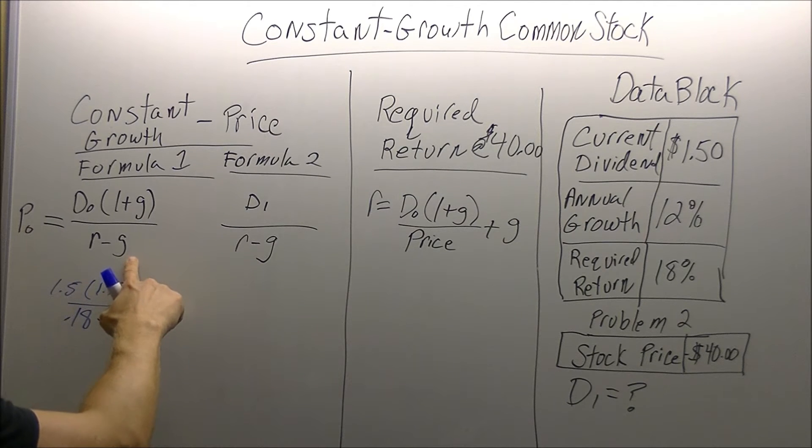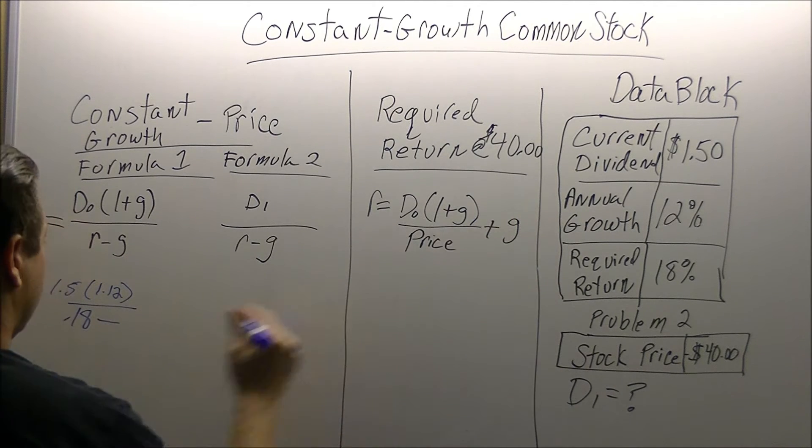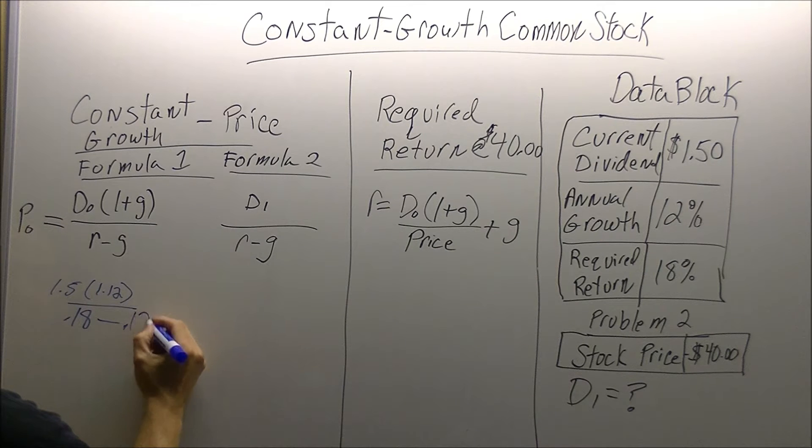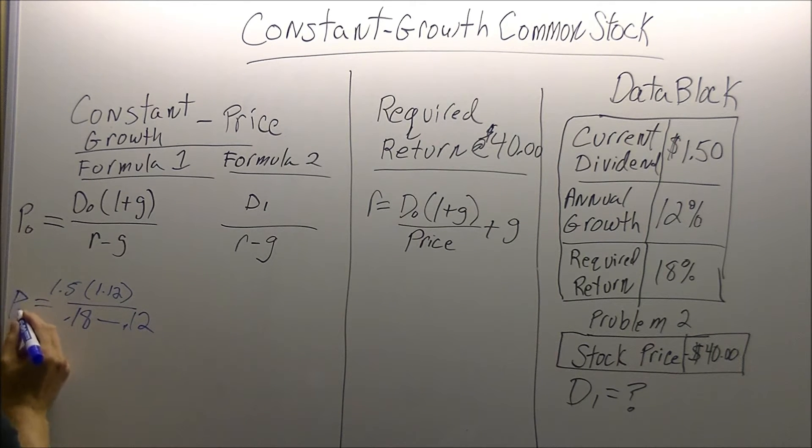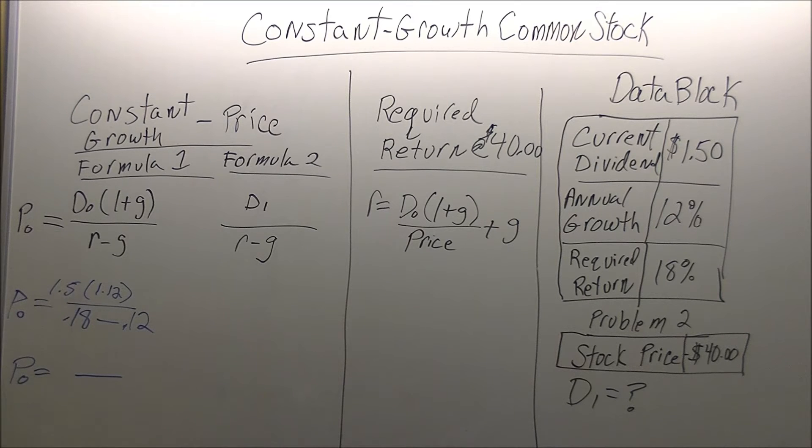It's 18%, 0.18. And the final one is our growth. We are solving for the current price. Next, we're going to set up our structure. We are going to multiply the top, 1.5 times 1.12. That is going to give us 1.68.